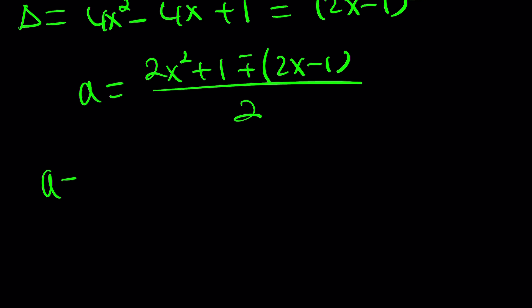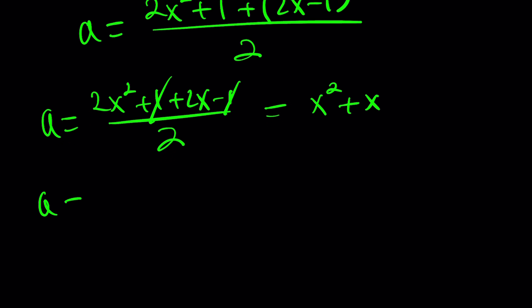2x minus 1 quantity squared. And that's awesome because we do need a perfect square discriminant or delta. So, now we can simplify this. 2a equals 2x squared plus 1 plus minus the square root of something squared. Divide by 2. A can be written as 2x squared plus 1 plus 2x minus 1 divided by 2, which simplifies to x squared plus x as one of the solutions. And, the second one is 2x squared plus 1 minus 2x plus 1 divided by 2, that simplifies to x squared minus x plus 1.